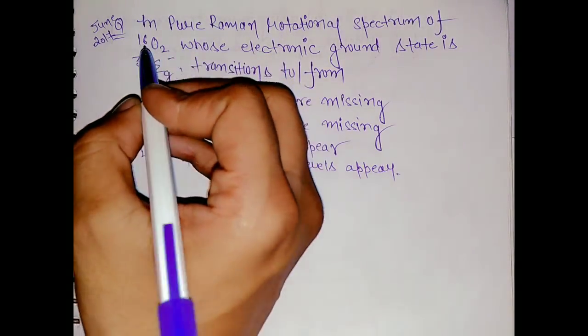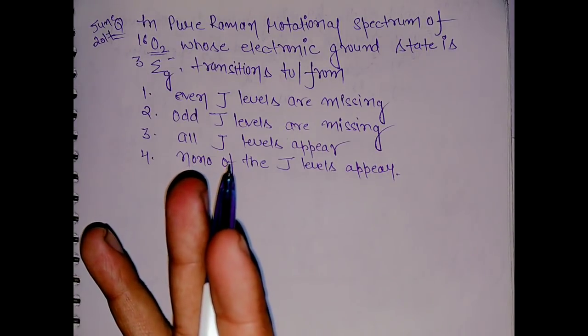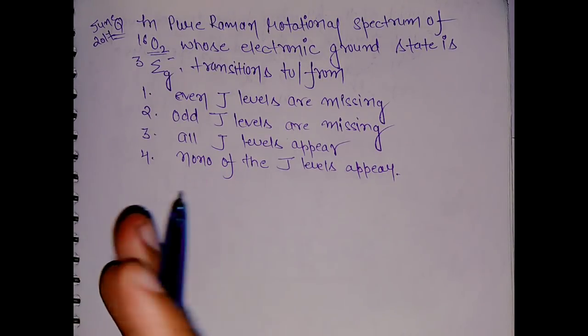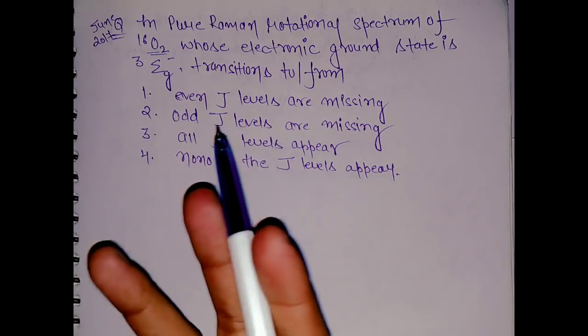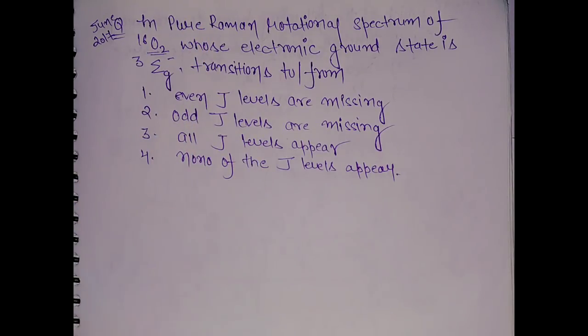In this question we have been given 16O2, which is a magnetically inactive nucleus. How to check that? If the mass is divisible by 4, that means the nucleus is magnetically active.